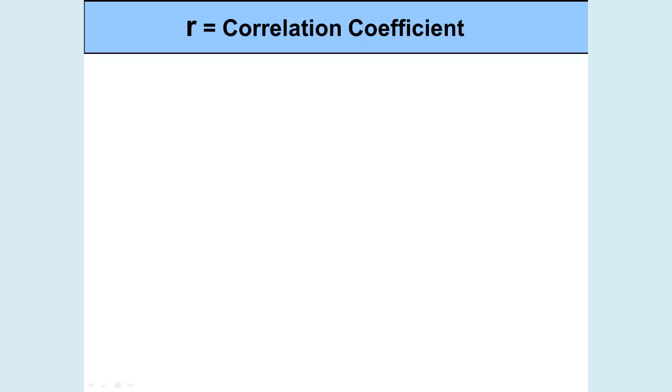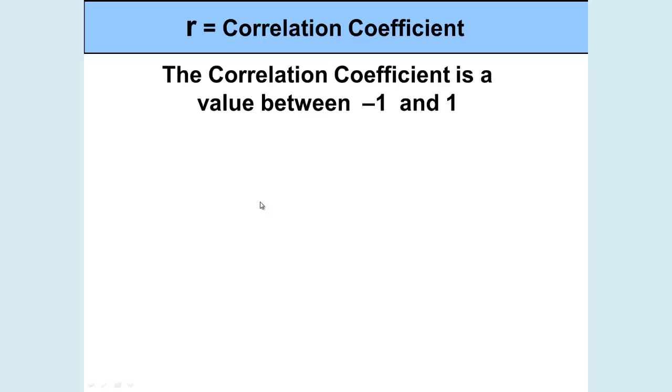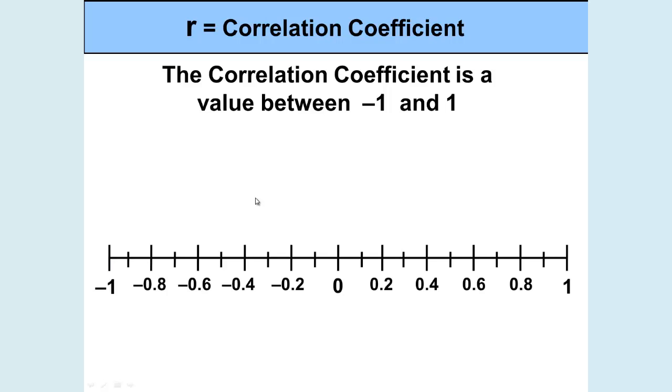We start this video by talking about the linear correlation coefficient that we define by the variable R. The correlation coefficient is a value between negative 1 and 1. Look at the number line. Mrs. Borlaug has drawn a number line from negative 1 to 1 and indicated some of the values in between. The correlation coefficient R can fall anywhere on this number line. If it falls at 0, there is absolutely no correlation.